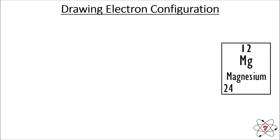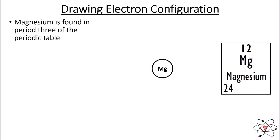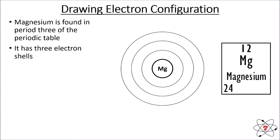We're going to look at the example of magnesium and see how we can draw the electron configuration for it. All the information we need is contained in the symbol found in the periodic table. Magnesium has an atomic number of 12, which means there are 12 protons and therefore 12 electrons. We draw the nucleus and simply write Mg — we do not need to draw all the protons or neutrons. Magnesium is found in period three of the periodic table, so there must be three electron shells.